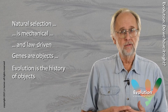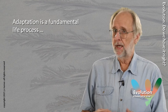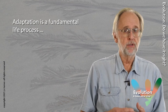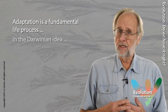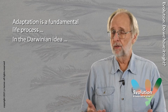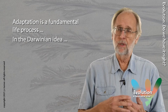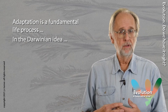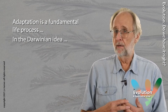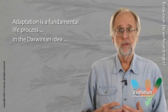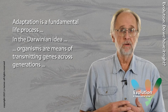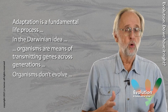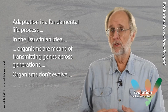There's an alternative built around what I call process thinking. Adaptation is a process central to the nature of life itself. In the Darwinian idea, the process might be acknowledged, but it's ultimately regarded as a sideshow. Organisms, where adaptation takes place, are simply vehicles for the transmission of objects — genes from generation to generation. Organisms don't evolve. Genes do.